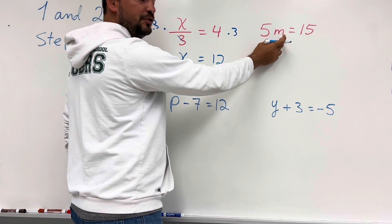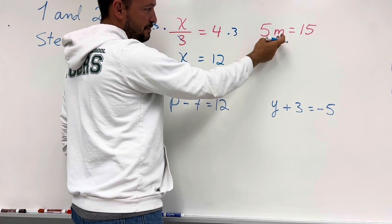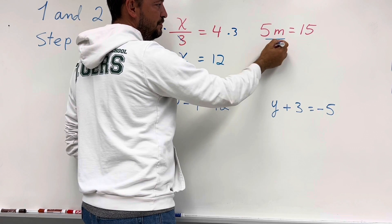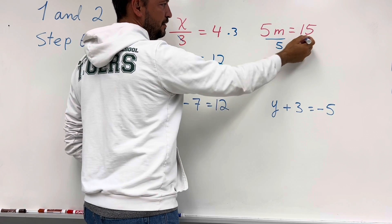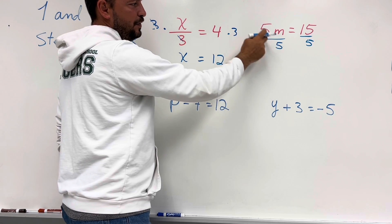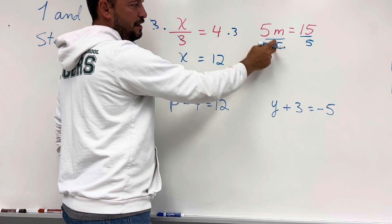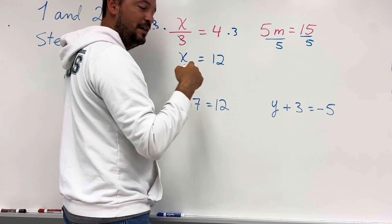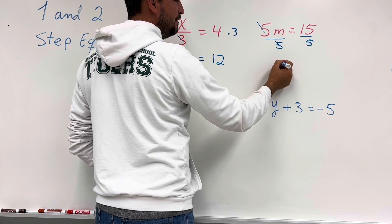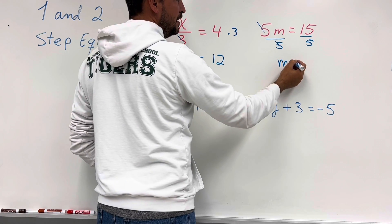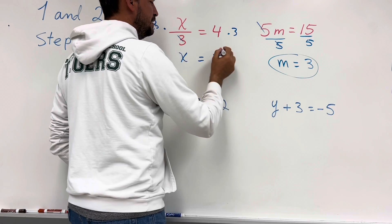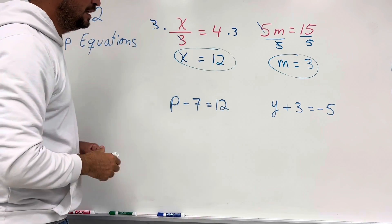In this case the variable m is being multiplied by 5, so we're going to divide by 5 on both sides. We divide by 5 because 5 divided by 5 is 1, and 1 times m is m. Simplifying gives us m equals 3. That's the answer.